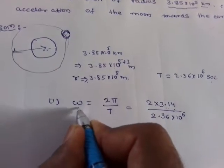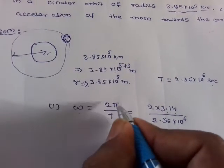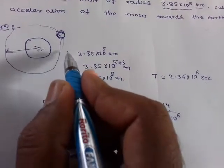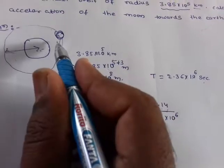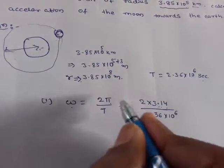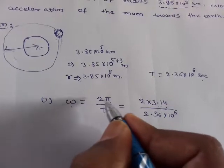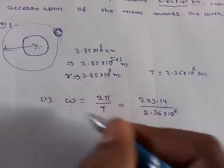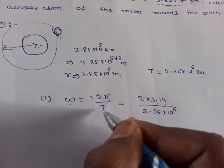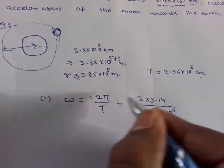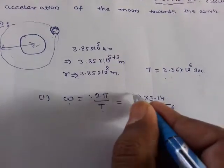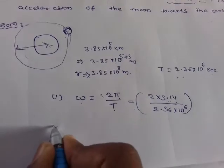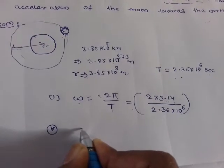Angular velocity: angle covered is 2π, so omega equals 2π divided by time taken. This is the time period. Angular acceleration — we use omega squared.